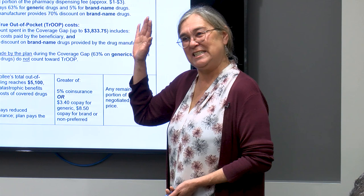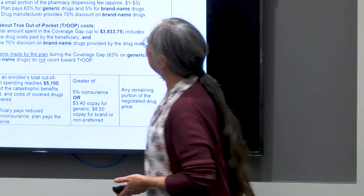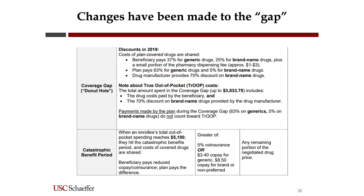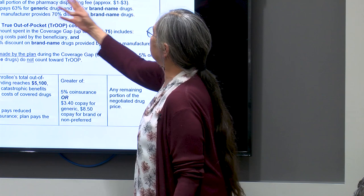In 2019, the coverage gap works differently: for brand name drugs, the drug manufacturer provides a 70% discount, the plan pays something, and the beneficiary pays something — but it's not 100%. The true out-of-pocket TROOP costs are defined as the 70% discount on brand name drugs and the amount paid by the beneficiary.